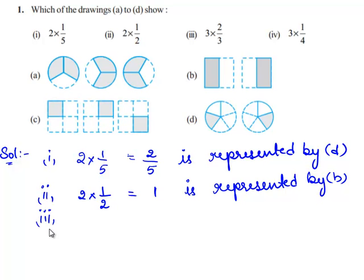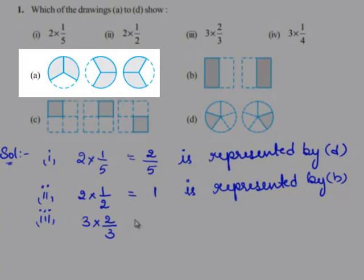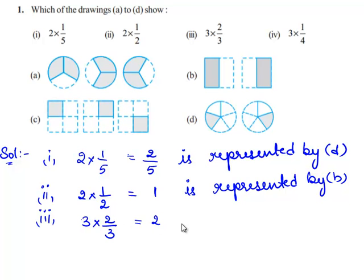Now let us move on to the third bit. We need to identify which drawing represents the fraction 3 times of 2 by 3. In drawing A, there are three circles. Each circle is divided into three parts, and in each circle two parts are shaded out of three. Therefore each circle represents the fraction 2 by 3. Since there are three circles, this represents 3 times of 2 by 3, which equals 2, and is represented by drawing A.